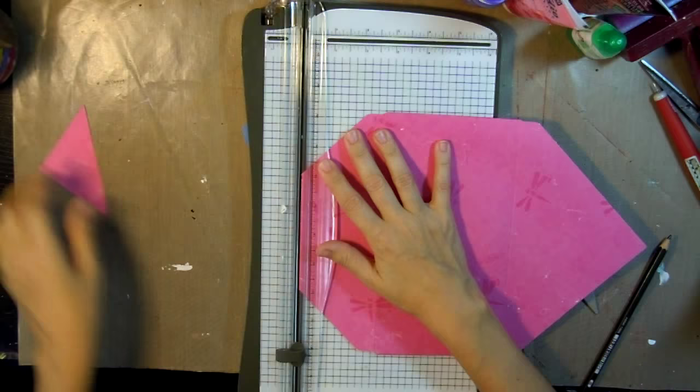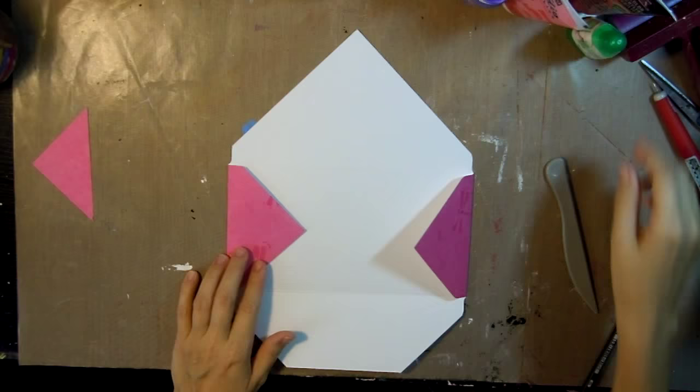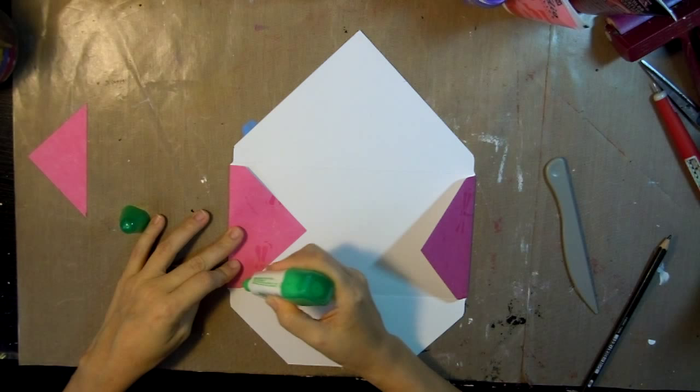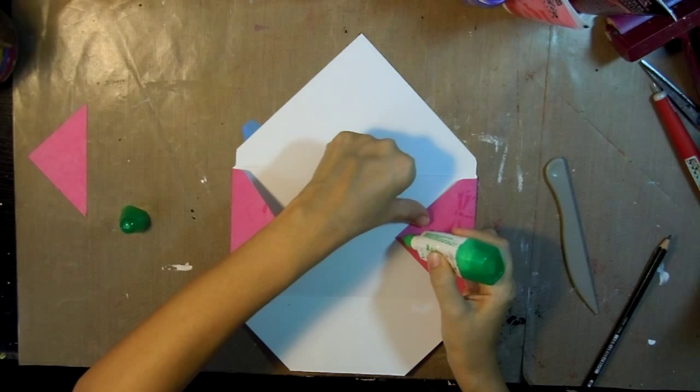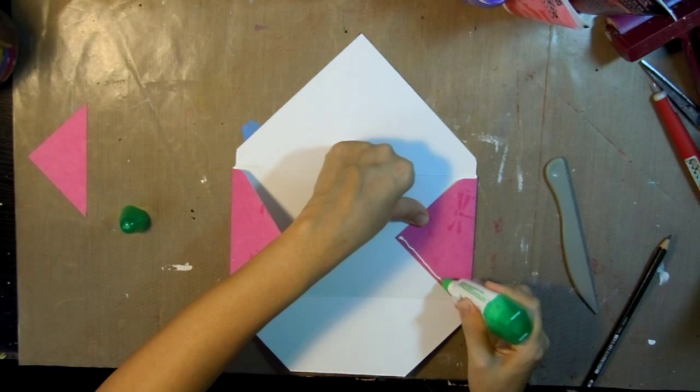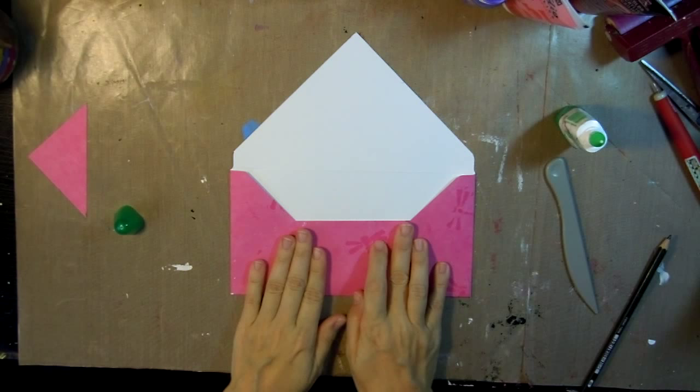Then I'll take my mono adhesive, or you can use any kind of Elmer's glue or any adhesive you have that's permanent, and put a line there to close up the envelope.